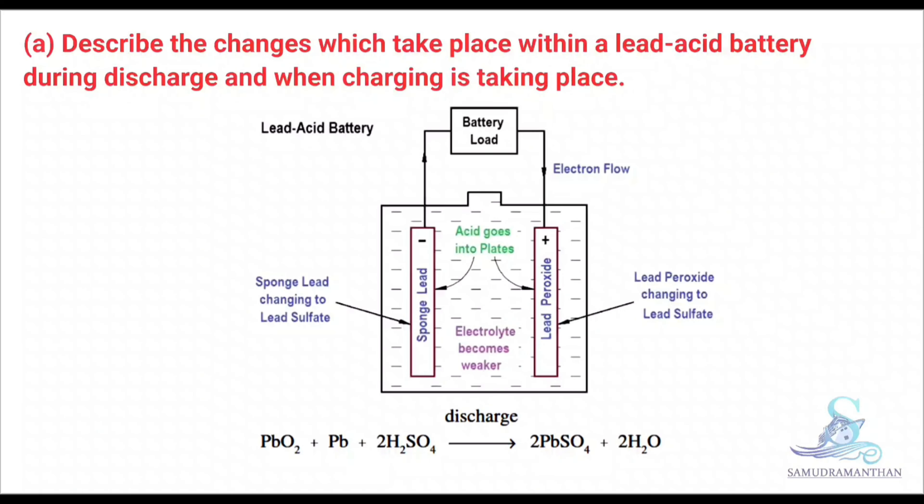This is the diagram of a battery being discharged. During discharge, sponge lead is changing to lead sulphate on the negative terminal and acid is going into the plates. Lead peroxide is changing to lead sulphate on the positive terminal and the electrolyte is becoming weaker. The chemical reaction is: PbO2 + Pb + 2H2SO4 → 2PbSO4 + 2H2O.